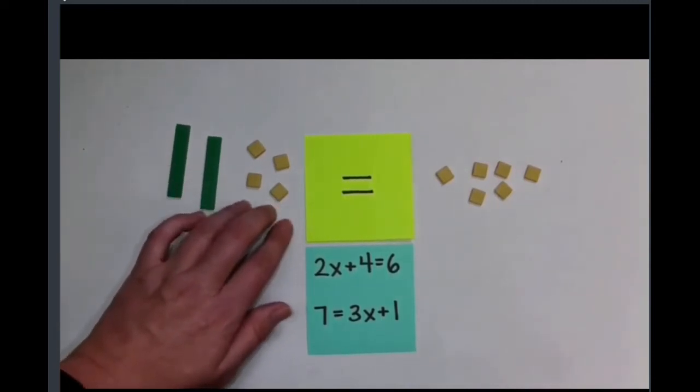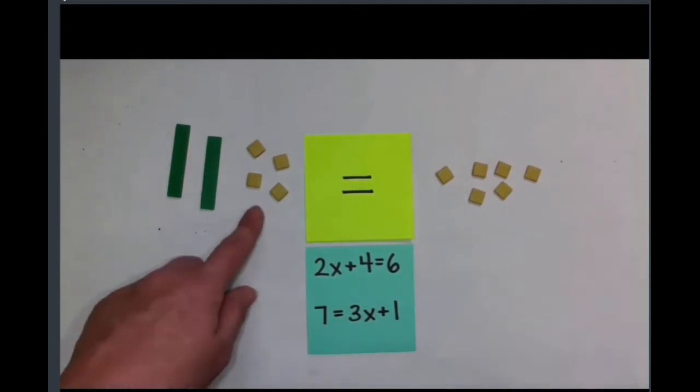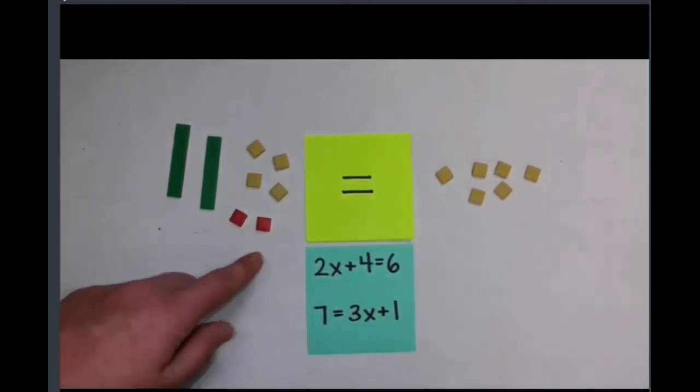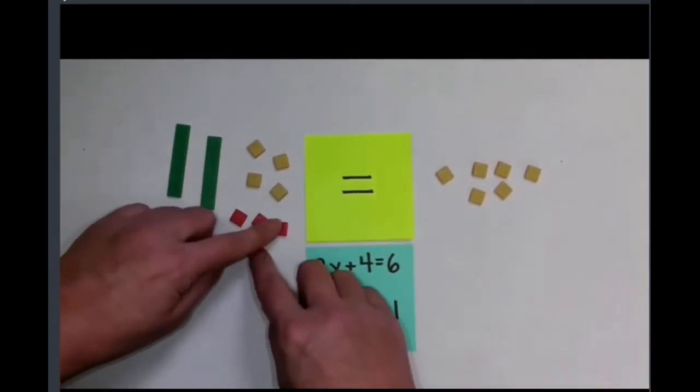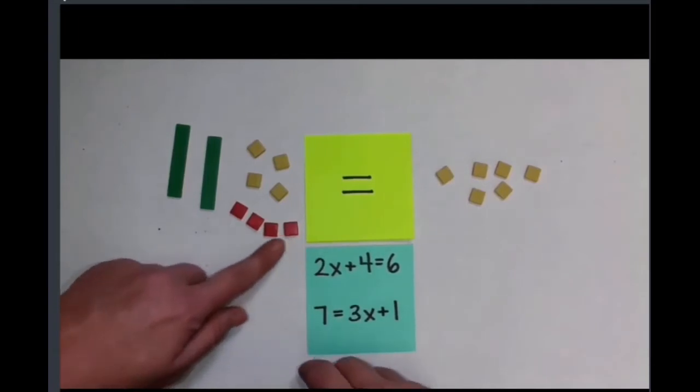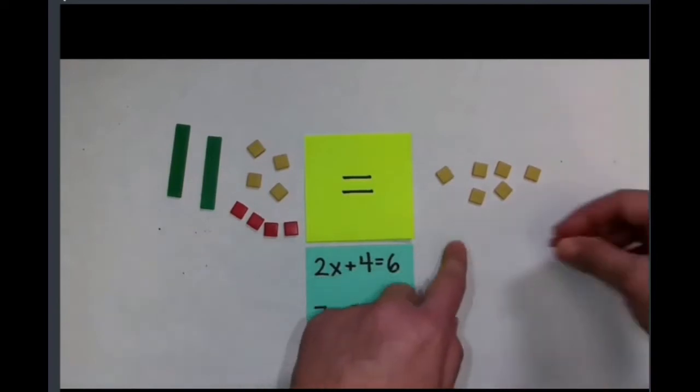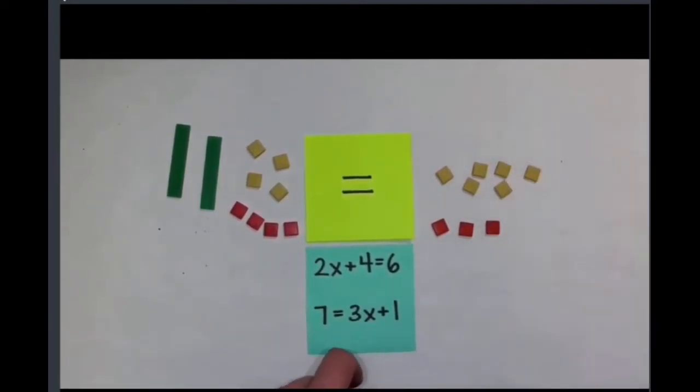I'm going to leave this X here and I want to remove this constant. We can do that by using zero pairs. I want to create four zero pairs over here so that this side of the equal sign will equal zero in terms of my constant. So I'll bring in four negative units to make that happen. But whatever you do to one side of equal sign you also have to do to the other, so also bring in negative four on that side of equal sign.